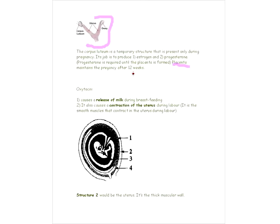Now we're going to talk about oxytocin. Remember progesterone kind of works against the contraction of the uterus? Well, oxytocin causes the contraction of the uterus during labor — that's how labor occurs. The uterus is smooth muscle that contracts. The other thing oxytocin does is it releases milk during breastfeeding. We're going to look at another hormone that works together with oxytocin — oxytocin releases milk, and we'll look at the hormone that produces milk.